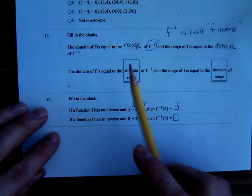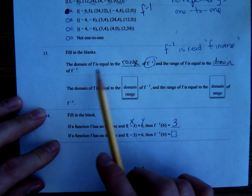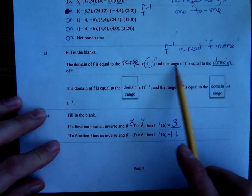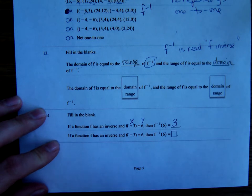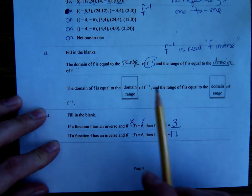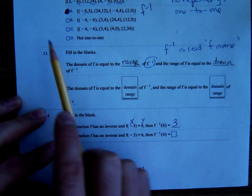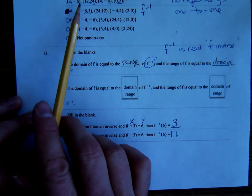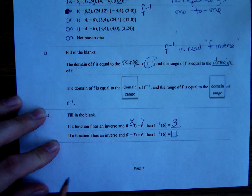The way we're switching x's and y's brings up an important statement. The domain of f is equal to the range of f inverse, the range of f is equal to the domain of f inverse. The x's became a y, the y became an x.